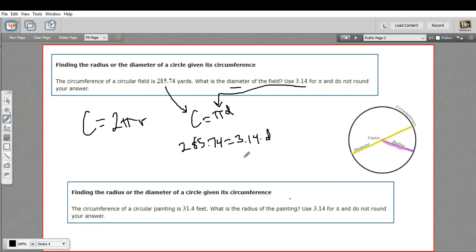So to solve for D, we would need to divide both sides by 3.14. So let me pull out my calculator here: 285.74 divided by 3.14, and I got 91. Nice even number. So in this case, D equals 91, and our units here were yards. So that is the diameter of that circular field.